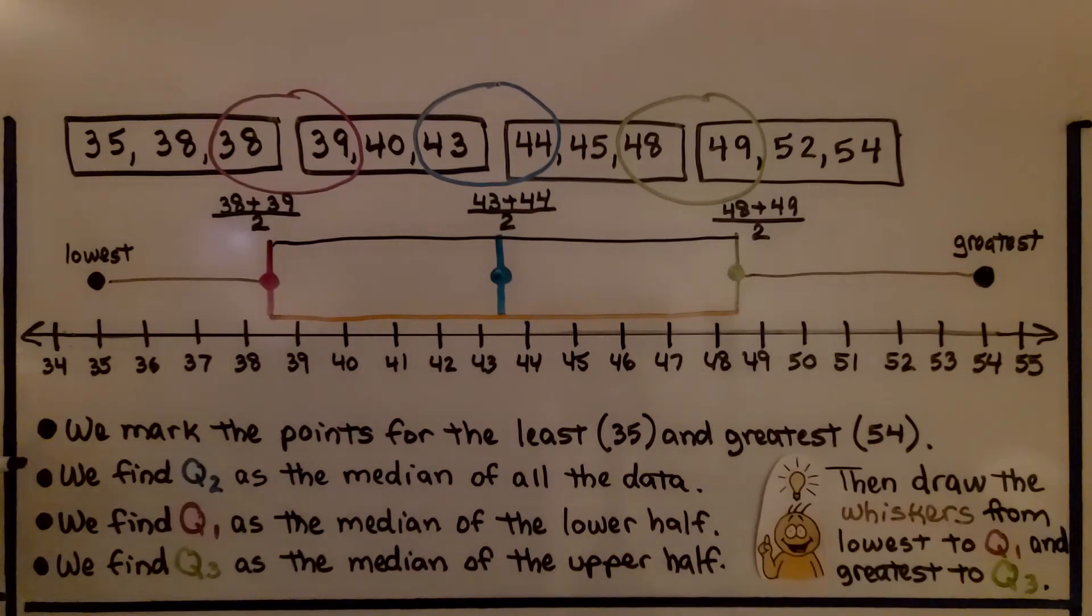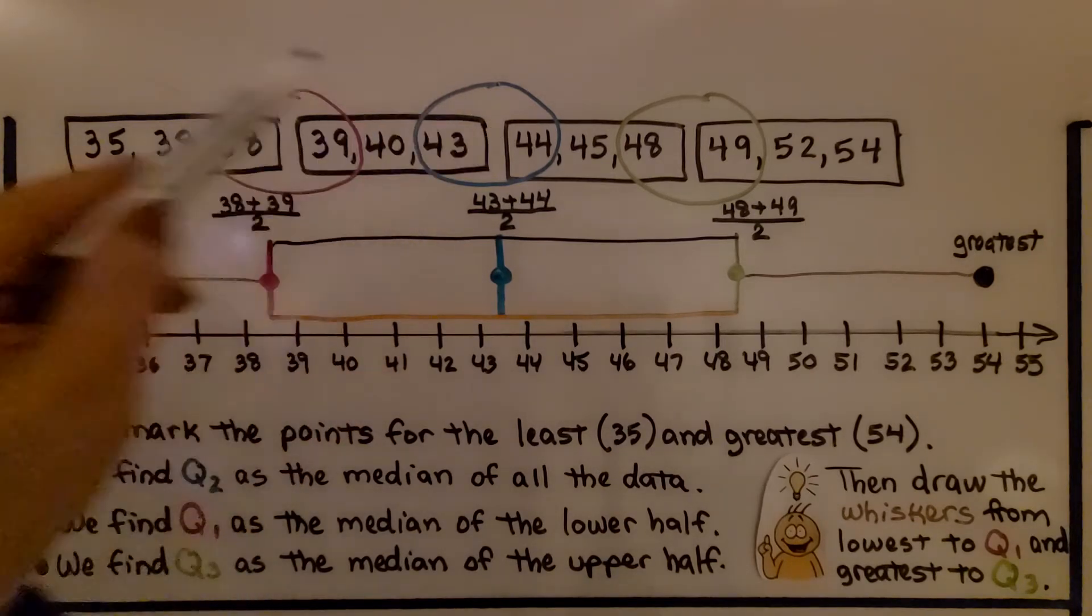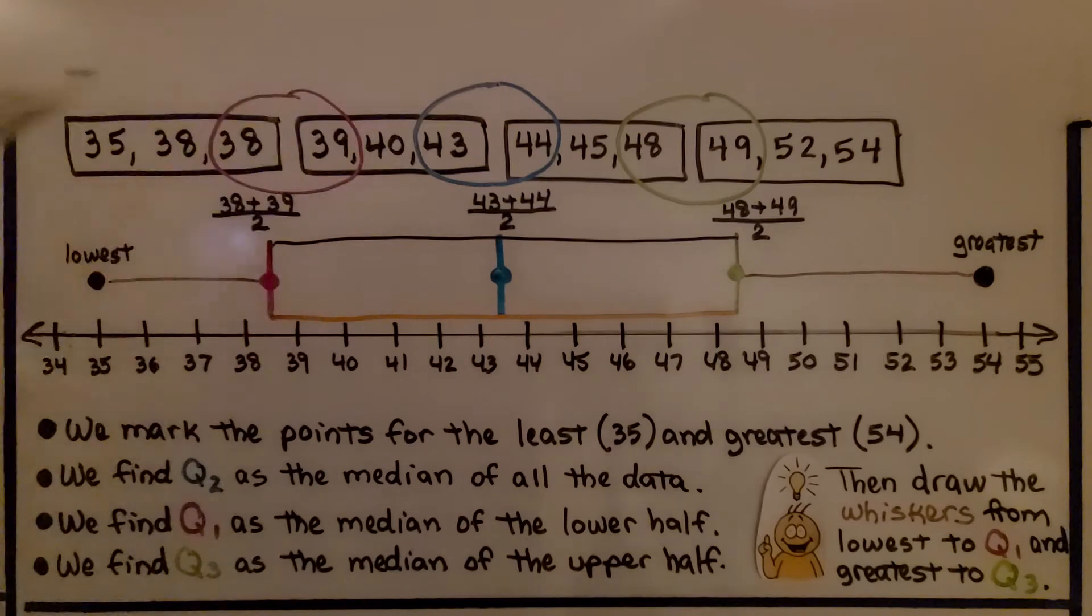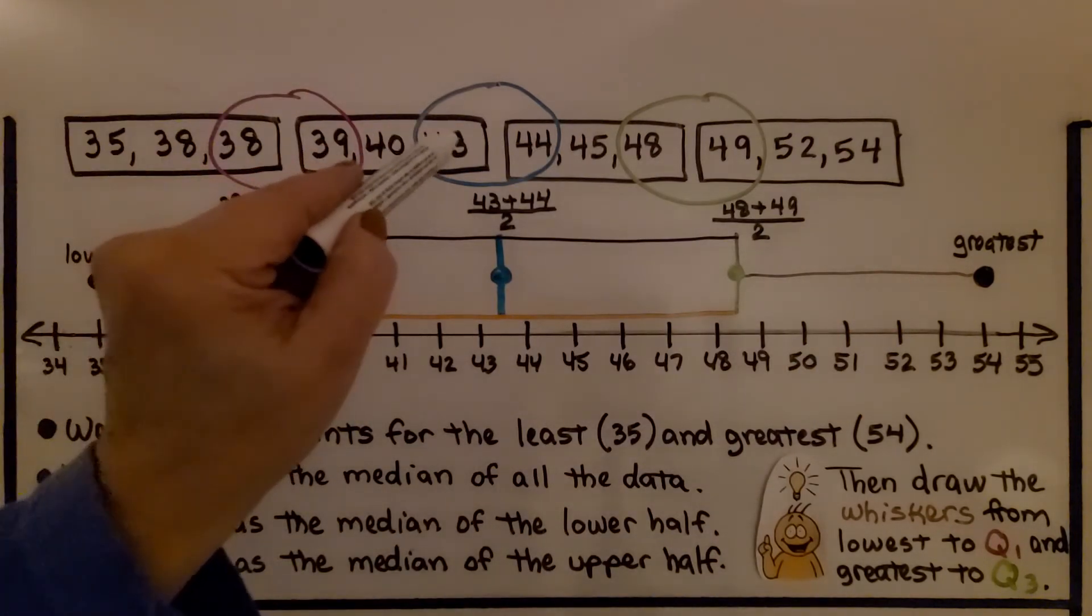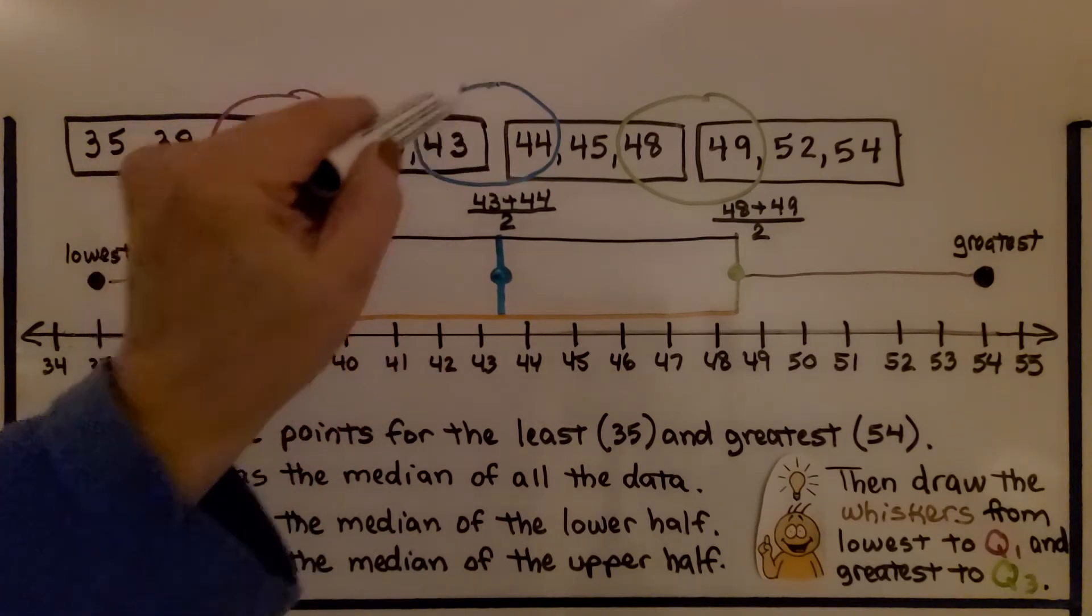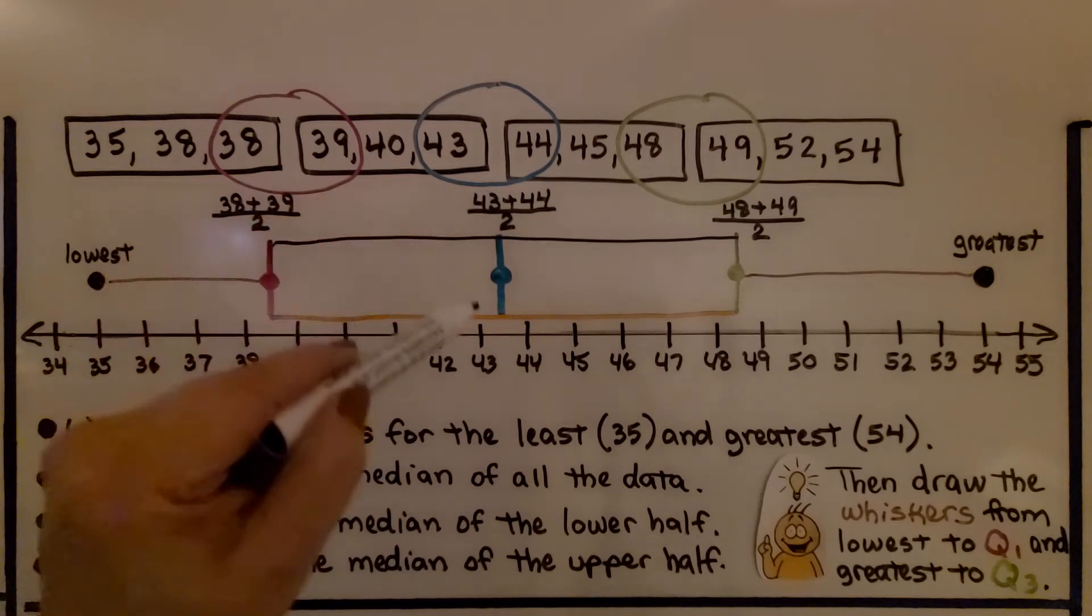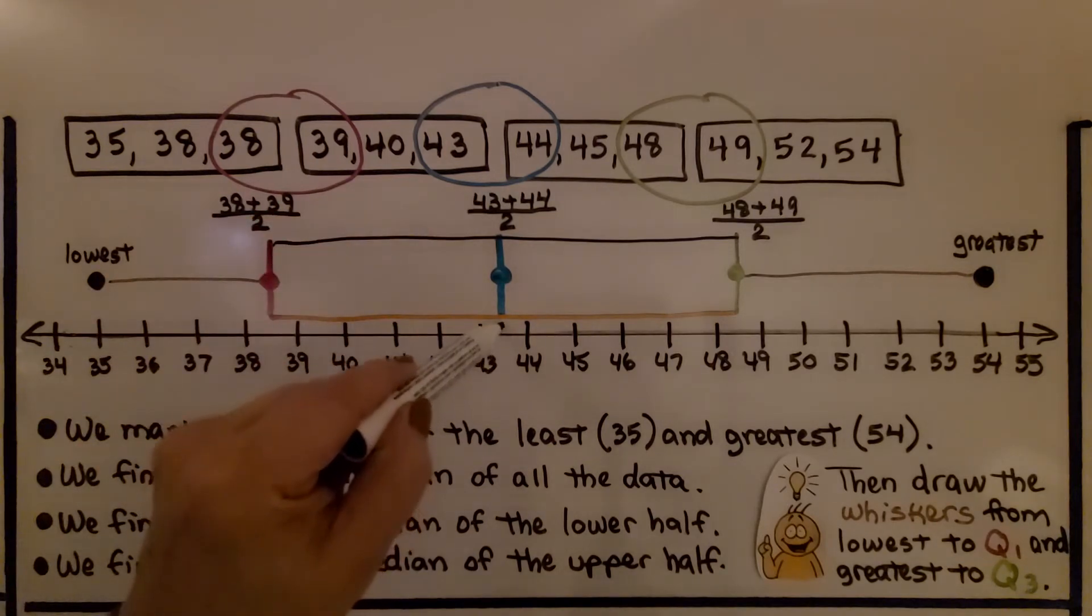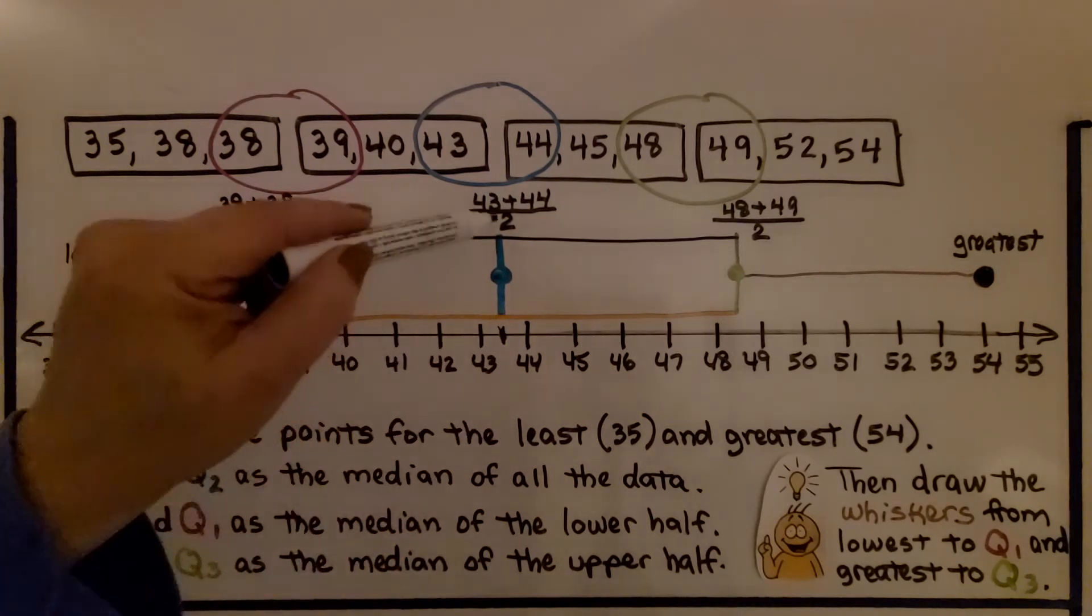Now we find Q2 as the median of the data. Remember how to find a median? It's the middle number. So we've got 12 numbers here. That's an even number. So we're going to have a 43 and a 44 in the middle for the median. So we need to find the average of that, which comes out to 43 and a half. So it's about right here. So that's Q2.